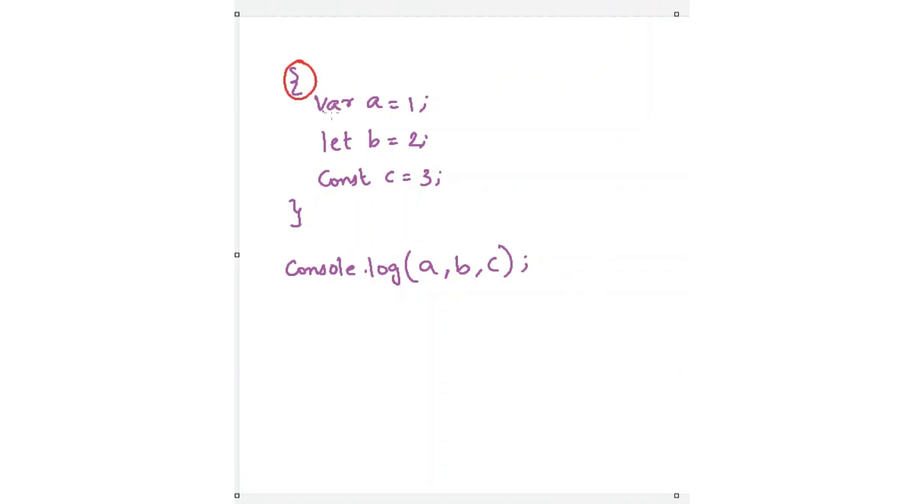Here, we are creating a block and inside this we are creating the variables a, b, c by the var, let and const keywords. And we are trying to log the values of a, b, c outside this particular block.